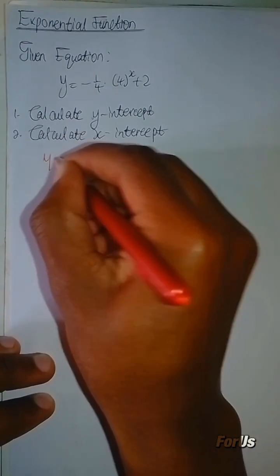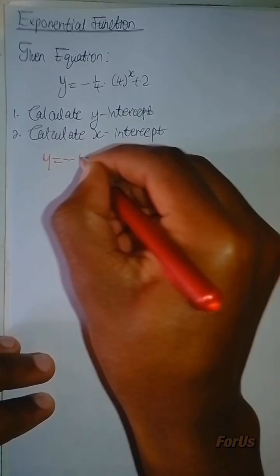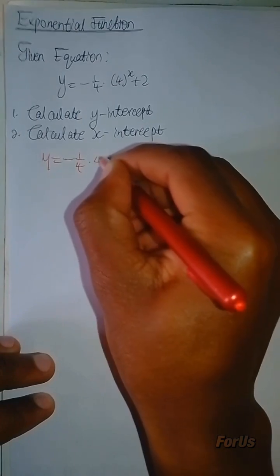To calculate the y-intercept, you're going to substitute 0 where you see x.